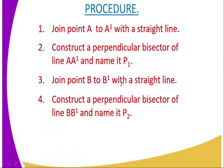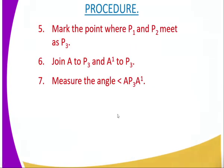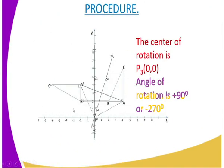Procedure number three: join B to B1 with a straight line, then construct a perpendicular bisector to join B and B1, and name it P2. You can see on this diagram — B is here, it is connected to B1, and there is a perpendicular bisector constructed. The perpendicular bisector P2 comes at the y-axis.